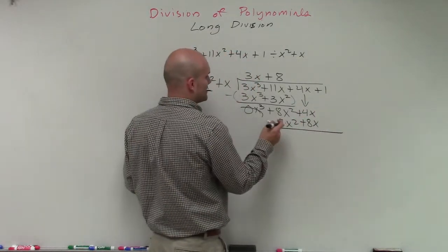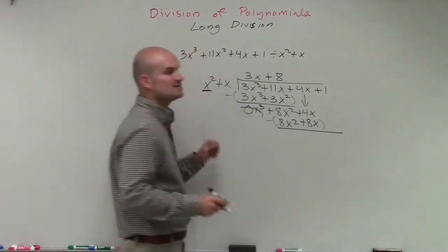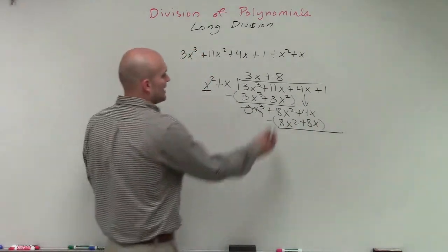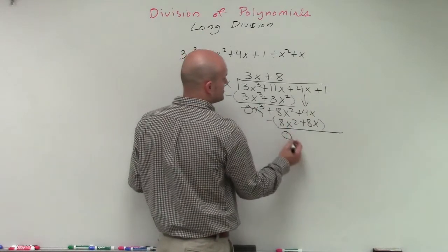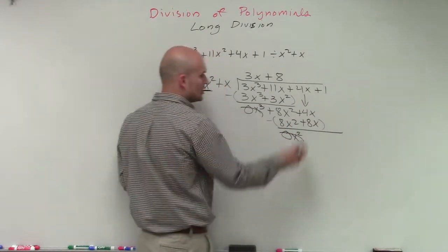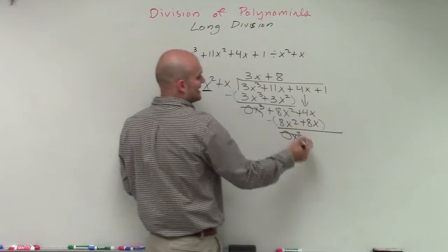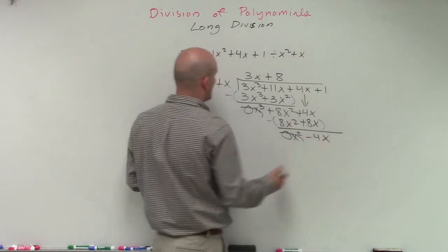Therefore, when I take my subtraction, I make sure I put in my parentheses to make sure I do not mess up at all. So 8x squared minus 8x squared is going to be a 0x squared, which is just 0. 4x minus 8x is going to be a negative 4x.